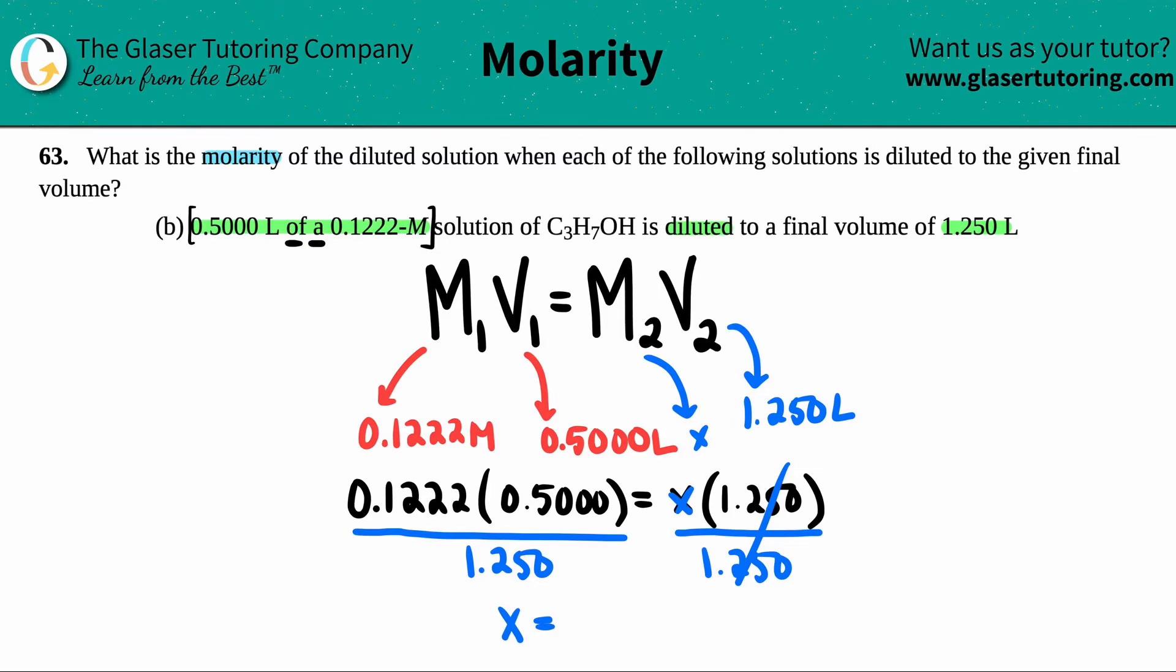And now we just plug it in: 0.1222 times 0.5 divided by 1.25. The lowest number of sig figs that I see in the equations is they all have four sig figs, so my answer should have four sig figs. So 0.04888, right, three eights. And this was a molarity. So just look and see what the other molarity unit was. Oh, it was capital M. So in this case I'm just going to say capital M.